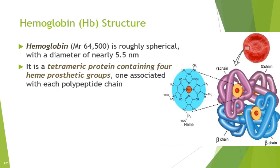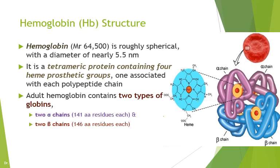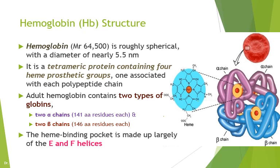Each subunit is bound to the heme prosthetic group. The polypeptides present within this hemoglobin are of two different types of globins: one is alpha and the second is beta. Each alpha chain is made up of 141 amino acid residues and the beta chain is composed of 146 amino acid residues. Note that an amino acid residue differs from an amino acid by a single molecule of water. The alpha or beta chain is bound to the heme prosthetic group, where functionality is carried out by the E and F helices of each chain, and the heme prosthetic group binds to oxygen for its function.